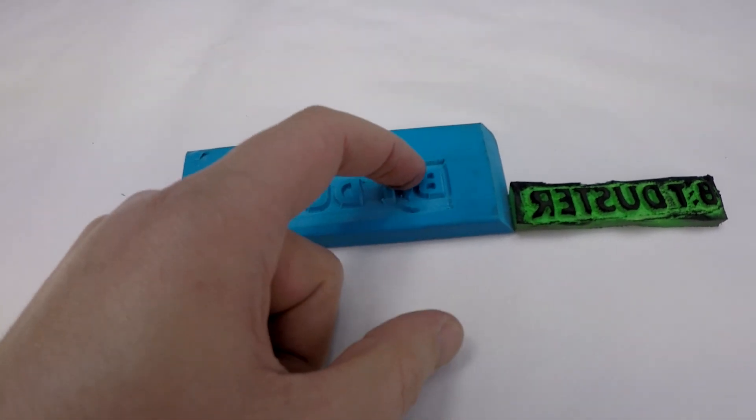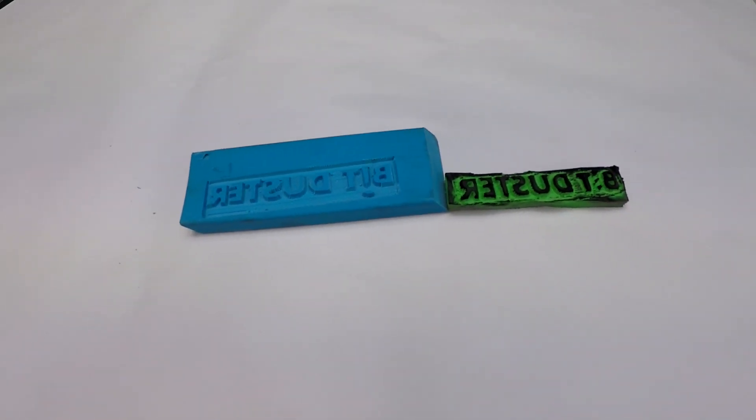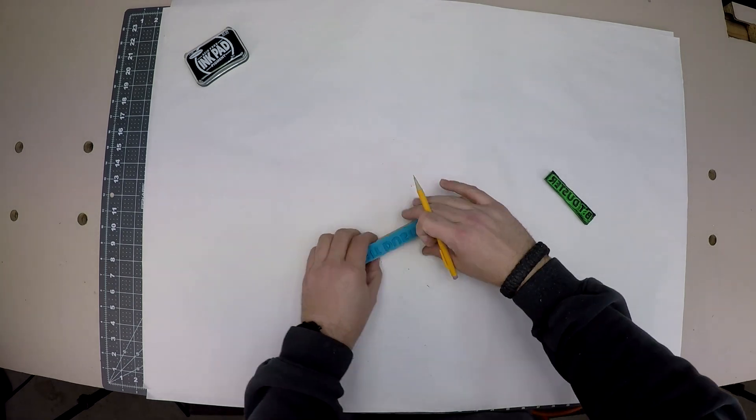See these lines? That's kind of part of my logo. So I'll just take the X-Acto knife and make some slits here and fix those.